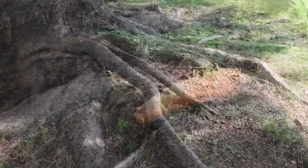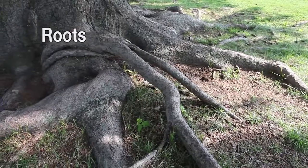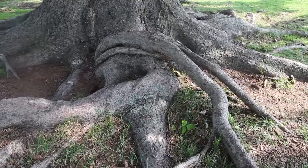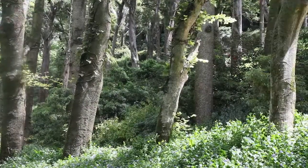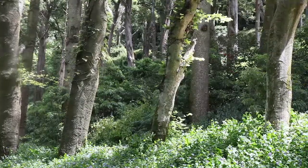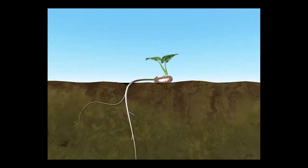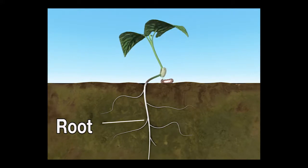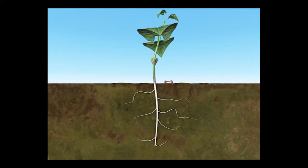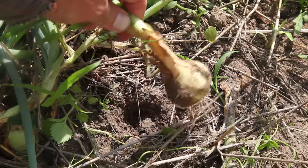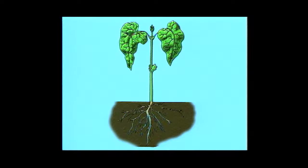Why are roots important? Roots perform several very important jobs. First, they hold the plant in place. Without roots, plants, such as large trees, would not be securely fastened to the ground. In many cases, the underground root of a plant is just as long as the part of the plant found above ground. In some cases, roots store food, which the plant uses later. Roots act like sponges, absorbing water and other important minerals from the soil.